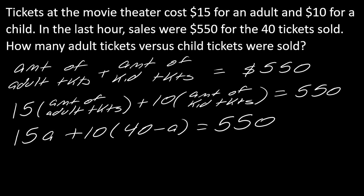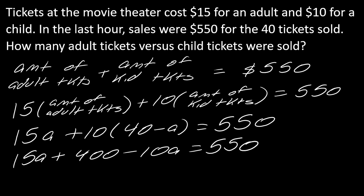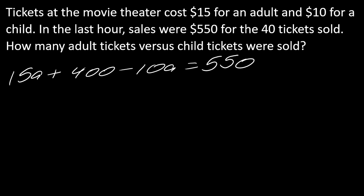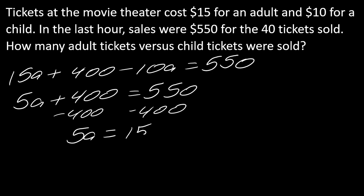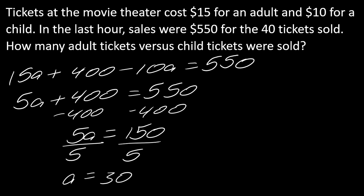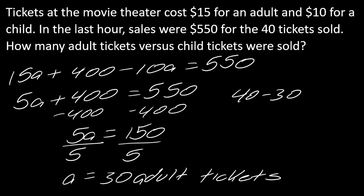So the full equation is 15A plus 10 times (40 minus A) equals 550. Distributing: 15A plus 400 minus 10A equals 550. Collecting like terms: 5A plus 400 equals 550. Subtracting 400 gives 5A equals 150, then dividing by 5 gives A equals 30. So there are 30 adult tickets. Since we need 40 tickets total, 40 minus 30 equals 10, so 10 kid tickets were sold.